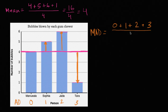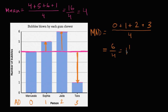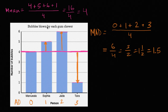We want the mean of those absolute deviations — that's the M in MAD. We have Manuela's, Sophia's, Jada's, and Tara's absolute deviations, and we divide by the number of data points. Zero plus one plus two plus three is six, over four. Six over four equals three halves, or one and a half, or 1.5. That gives us a measure of how much these data points vary from the mean of four.